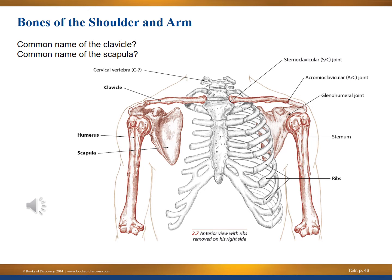Let's look at the common names of the bones of the shoulder and arm. You'll see the clavicle, humerus, and scapula highlighted. Moving to the right side of the image, you see the sternoclavicular joint, the acromioclavicular joint (the AC joint) on the lateral end of the clavicle, the glenohumeral joint (the shoulder joint), the sternum, and the ribs. The common name of the clavicle is the collarbone; the scapula is the shoulder blade; and the sternum is sometimes called the breastbone or breastplate.